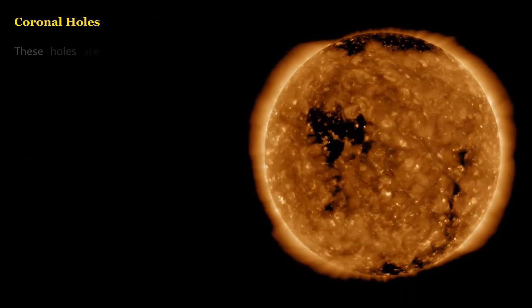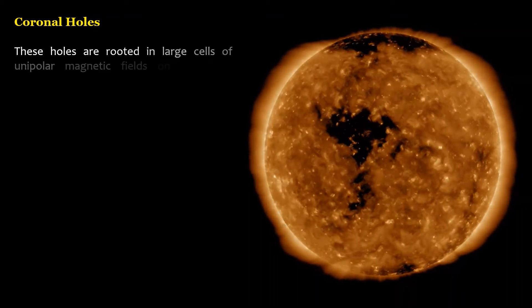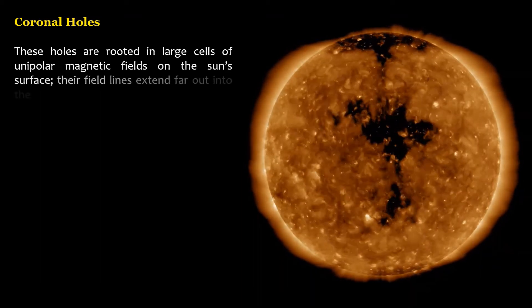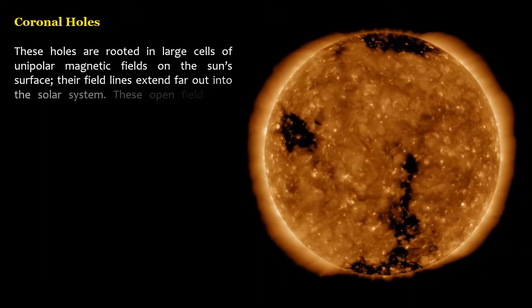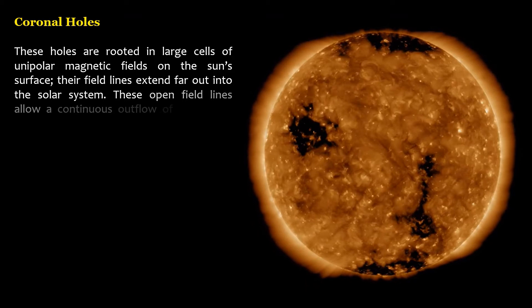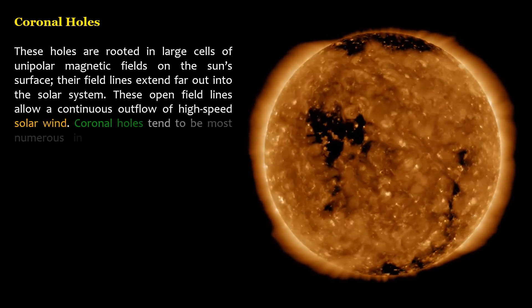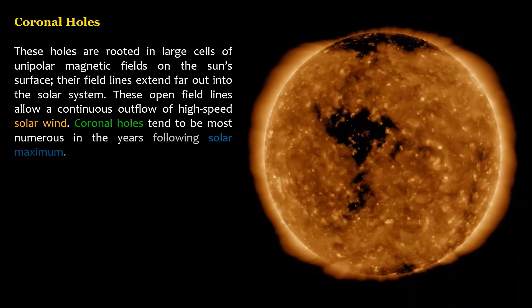These holes are rooted in large cells of unipolar magnetic fields on the sun's surface, their field lines extend far out into the solar system. These open field lines allow a continuous outflow of high-speed solar wind. Coronal holes tend to be most numerous in the years following solar maximum.